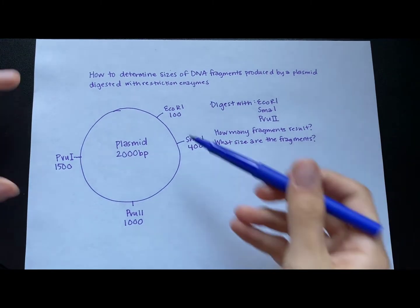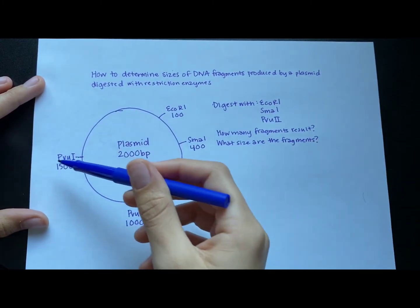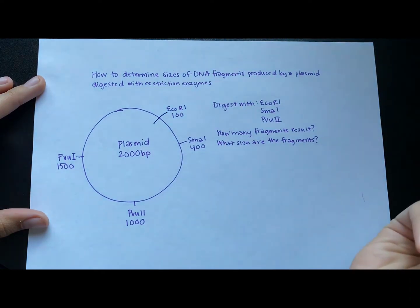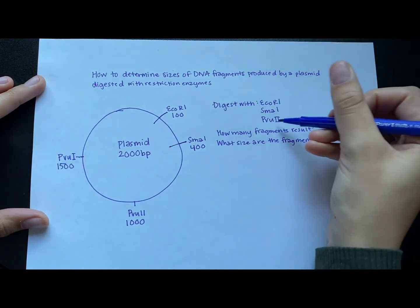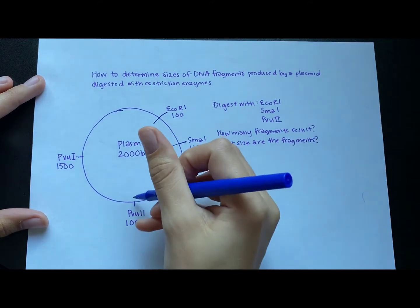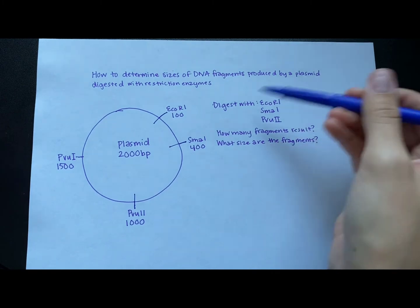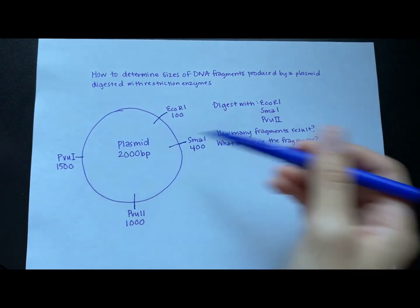So in this whole plasmid, there are four different restriction sites, right? You count four of them. But we are only digesting with three different enzymes. So go ahead and cross off or mark where these three restriction enzymes are going to cut. Notice that this last site for PVU-1 is cut by the enzyme PVU-1, but I didn't tell you to digest with that enzyme. So that site is not going to get cut because the enzyme is not present.